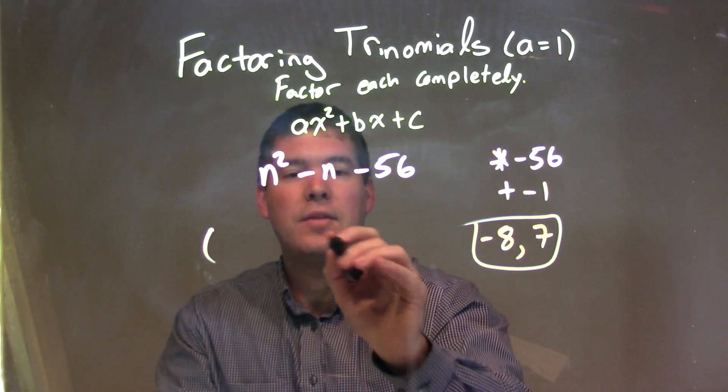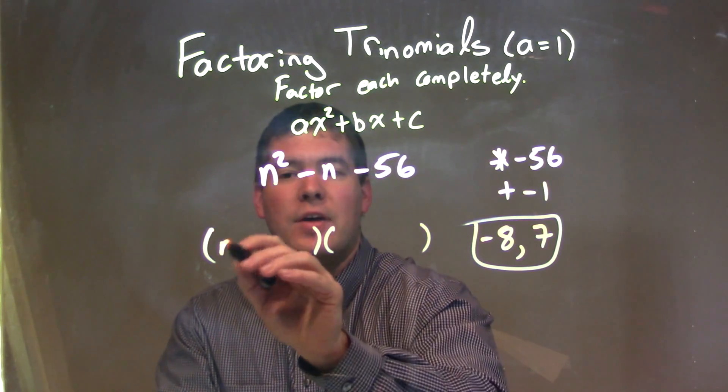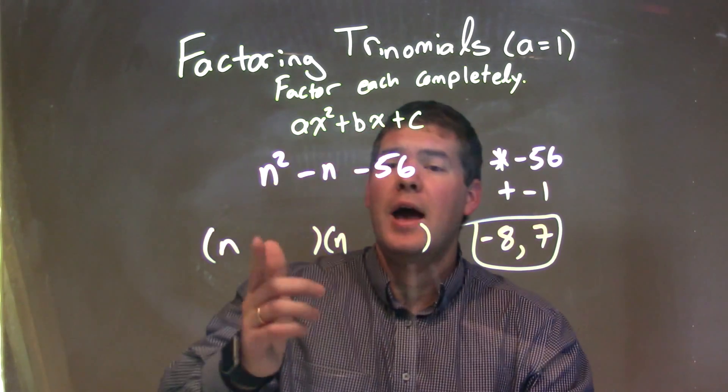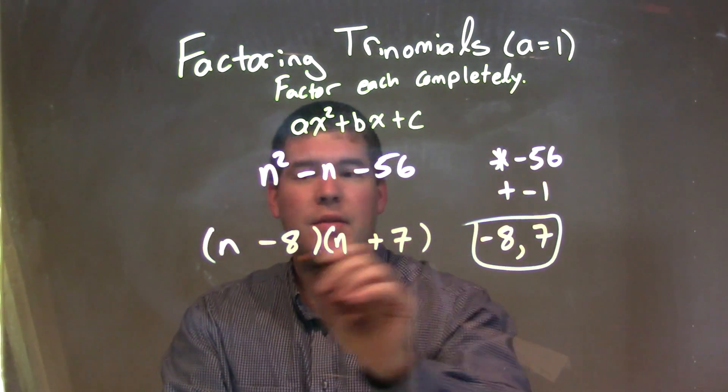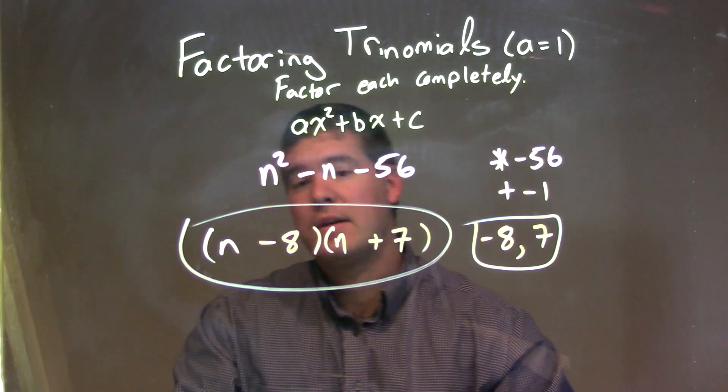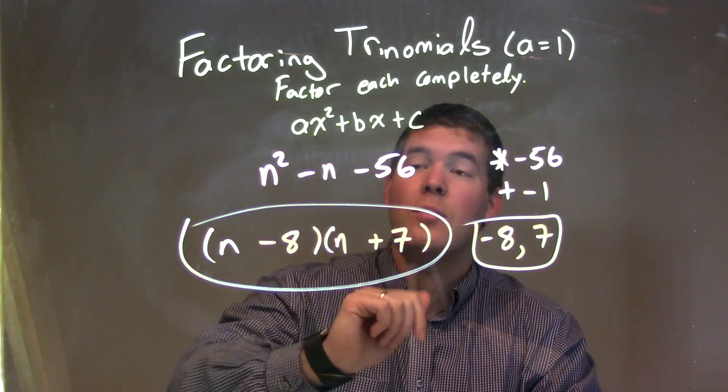So we can write this out here. Our n value first, n minus 8, times n plus 7, and there we go. Our final answer in factored form is n minus 8 times n plus 7.